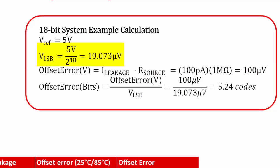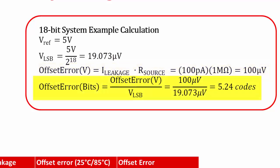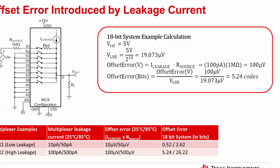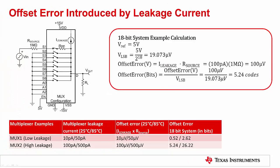For MUX 1, leakage current of 10 picoamps and 50 picoamps over a specified temperature range causes an offset error of 10 microvolts and 50 microvolts, while for MUX 2, leakage current of 100 picoamps and 500 picoamps causes an offset error of 100 microvolts and 500 microvolts. Since the multiplexer is connected to a data acquisition system, it is useful to calculate the error in codes. The LSB resolution is calculated by dividing the reference voltage by the total number of codes: V sub LSB equals 5 volts divided by 2 to the 18th, which equals 19.073 microvolts. The offset error in volts is calculated by multiplying the leakage by the source resistance — in this case, 100 microvolts — giving a total error of 5.24 codes. Thus, it is important to choose a multiplexer with low leakage current when designing high input impedance data acquisition systems.